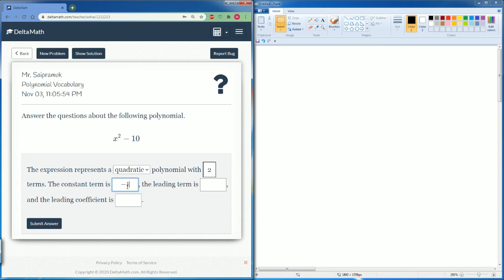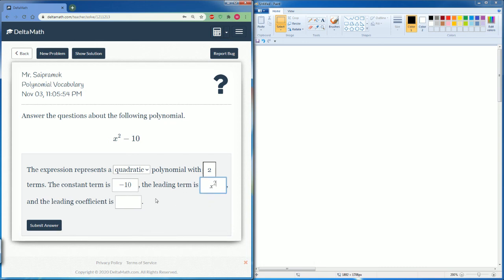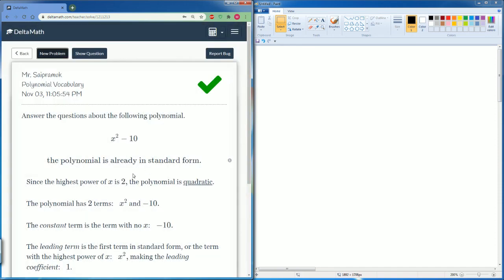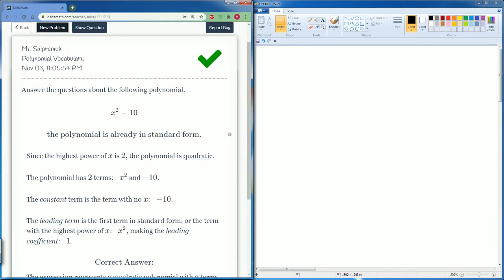The constant term is negative 10. That is just the number. The leading term is x to the second power. And the number in front of the x is just 1. So there you go. That is how you do polynomial vocabulary.